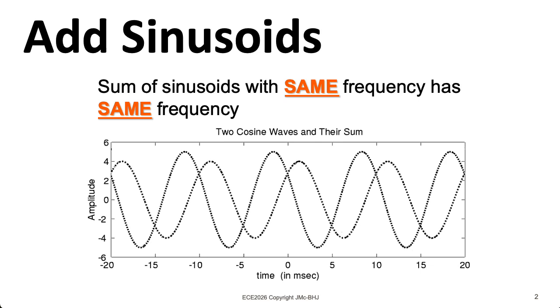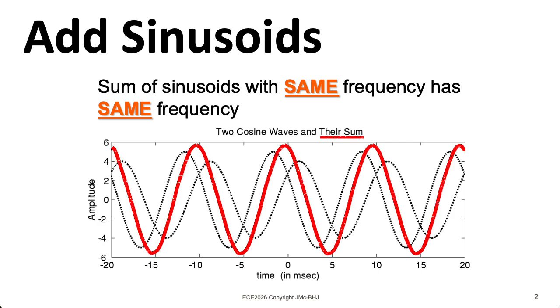So here's a couple of sinusoids. They have different amplitudes and different phases, but they have the same frequency. And if we add them up, something interesting happens. We get another sinusoid of the same frequency, but with an amplitude and a phase that will depend on the amplitudes and phases of the component sinusoids.